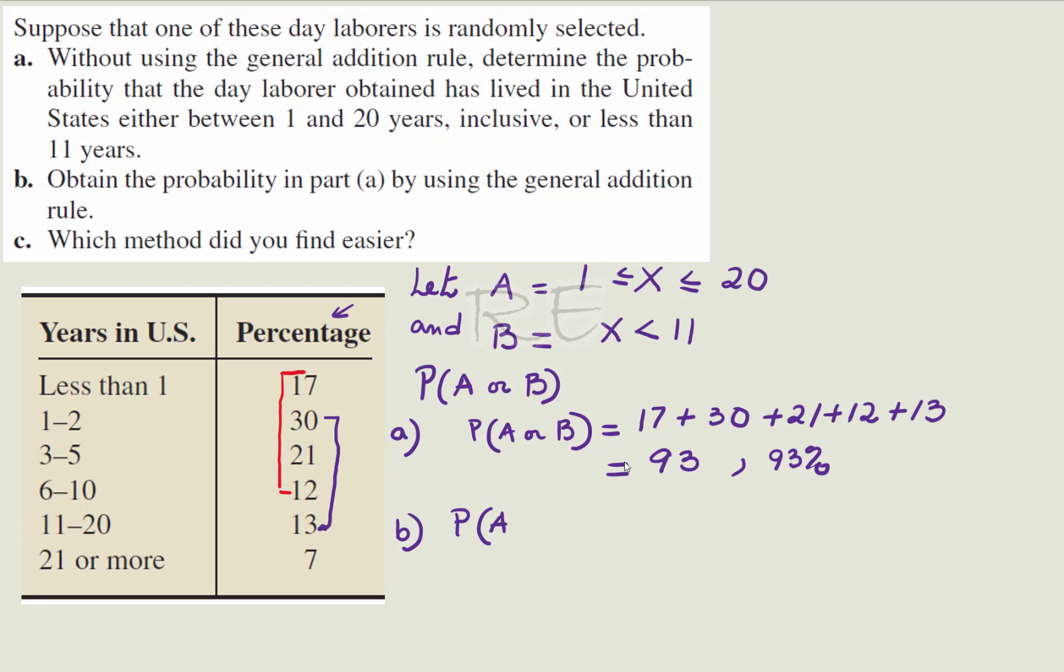Now, using the General Addition Rule, P of A or B will be equal to P of A plus P of B minus P of A and B.